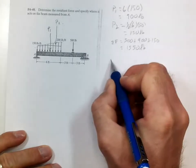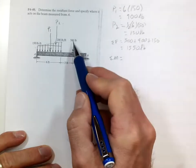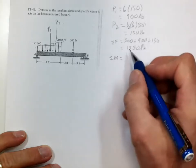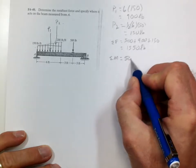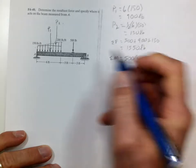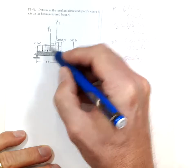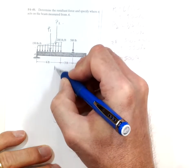Now let's sum the moments. Then we get 500 times 9. Now this one acts two-thirds away from there, so that is 4 feet,